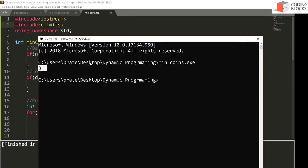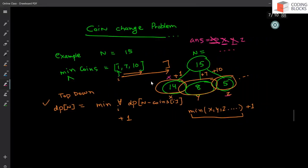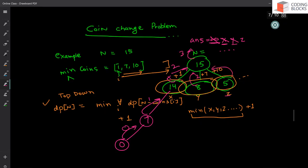You can see the answer is 3 — to make 15 rupees you need 3 coins. Tracing through: 15 calls 14, 14 calls 7, and 7 calls 0. Zero returns 0, 7 returns 1, 14 returns 2, and 15 returns 3. Comparing all paths: 15 also returns 2 via another route, and 5 returns 5. The minimum of 2, 2, and 5 is 2, so the answer for 15 is 3.